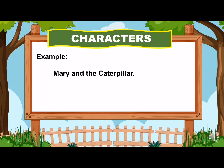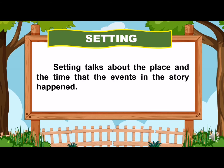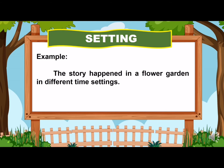Example: In the story, the characters are Mary and the caterpillar. Next, we have the setting. Setting talks about the place and the time that the events in the story happened. The example of setting: the story happened in a flower garden in different time settings.